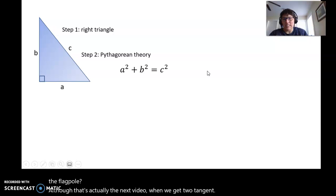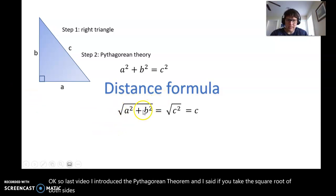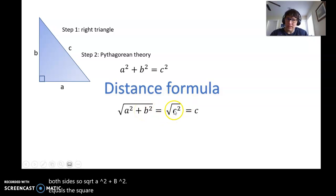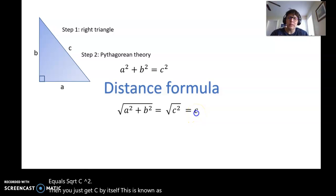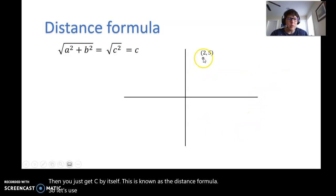Okay, so last video I introduced the Pythagorean Theorem and I said if you take the square root of both sides, square root of a squared plus b squared equals the square root of c squared and you just get c by itself. This is known as the distance formula.